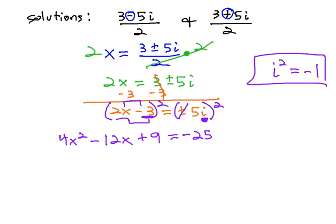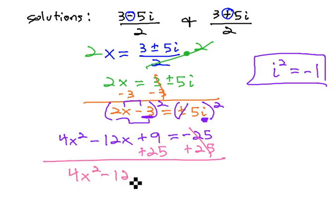We can finish it off then, to find our final equation by adding 25 to both sides. This gives us 4x squared minus 12x plus 34 equals 0.